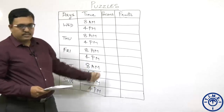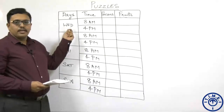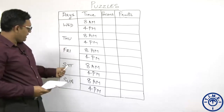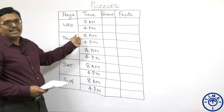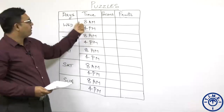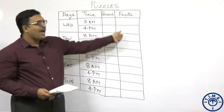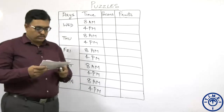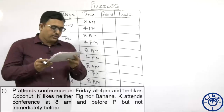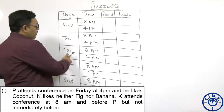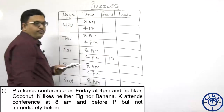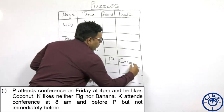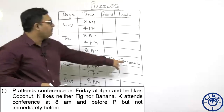This is how the arrangement looks: 10 persons and 10 different fruits, conferences organized for 5 days from Wednesday through Sunday, with 2 time slots each — 8AM and 4PM. Now coming to the first condition: P attends the conference on Friday at 4PM and he likes coconut.